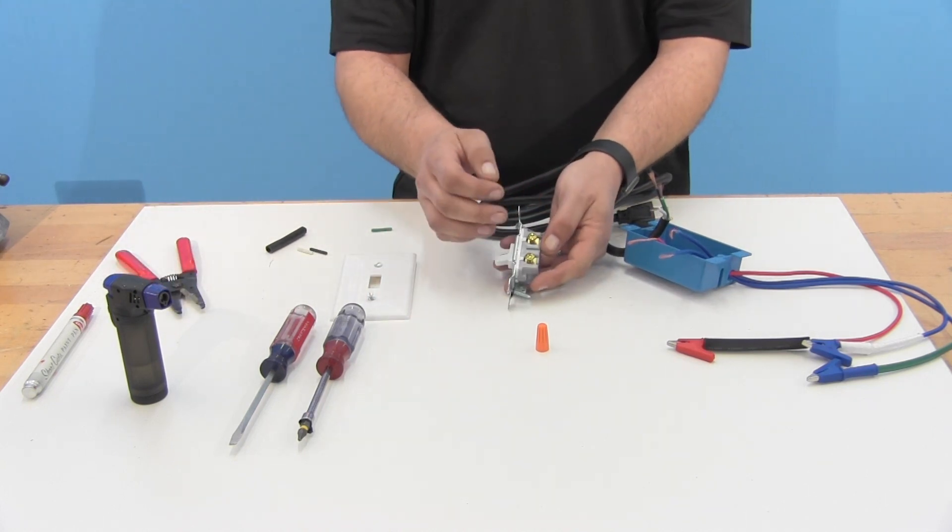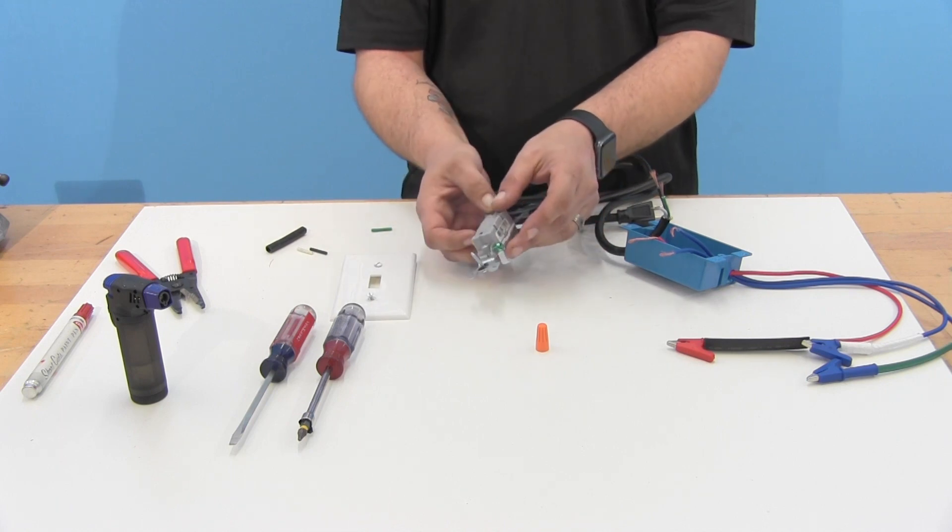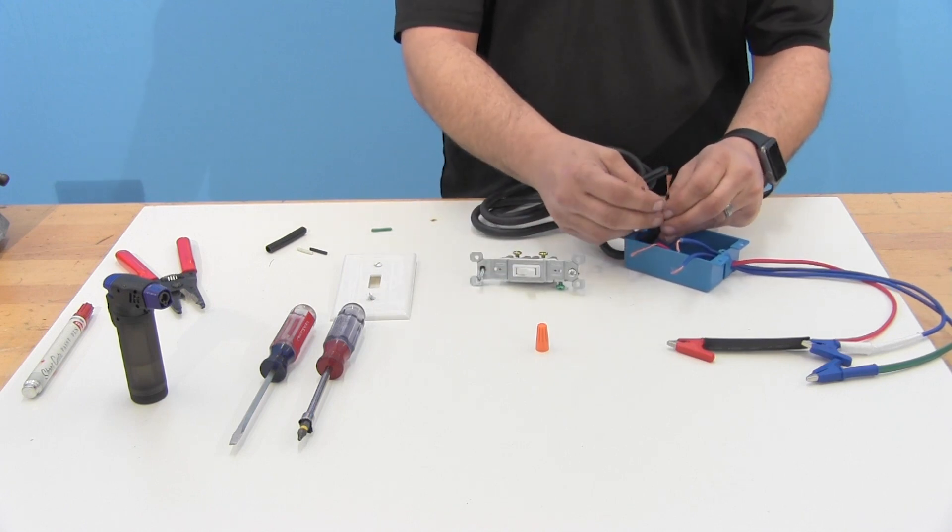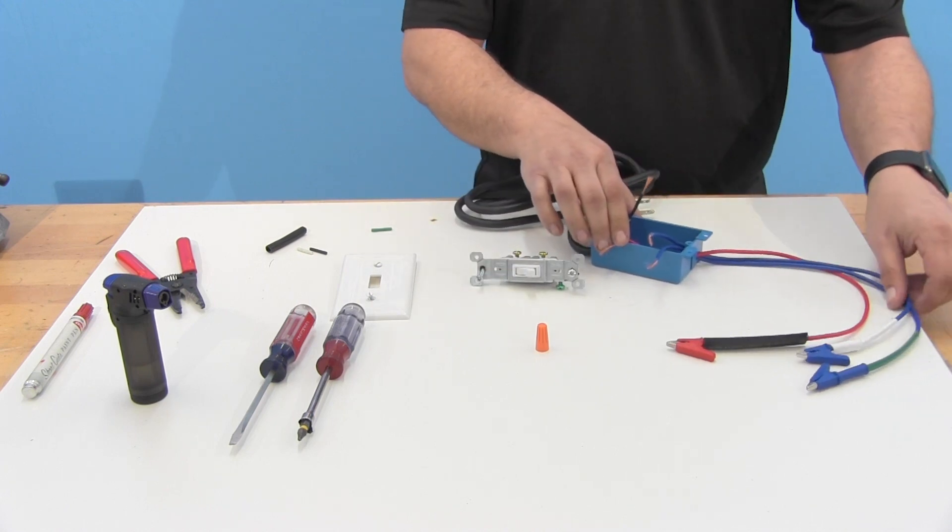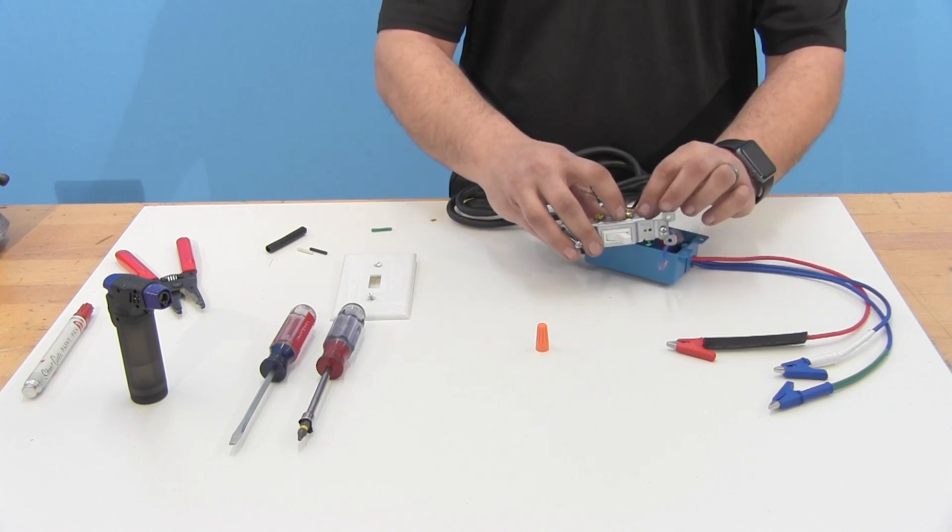And then you're going to take your light switch. We have two brass screws there which is going to be our hot side and we have a ground. So we're going to find our two hots, the black in the power supply cord and then we're going to locate the red one here on our alligator clips.